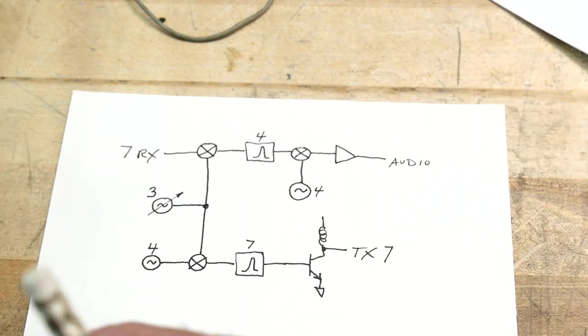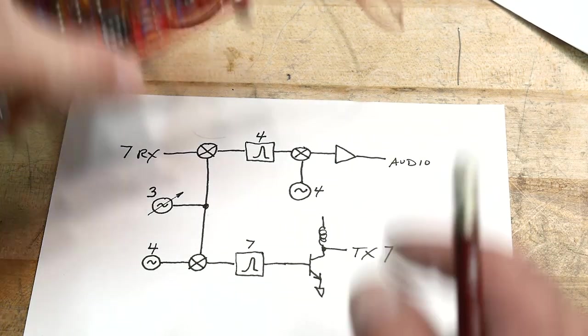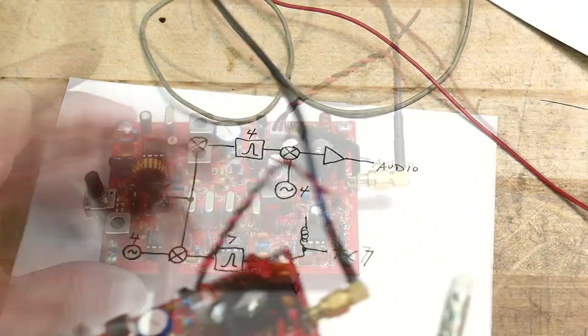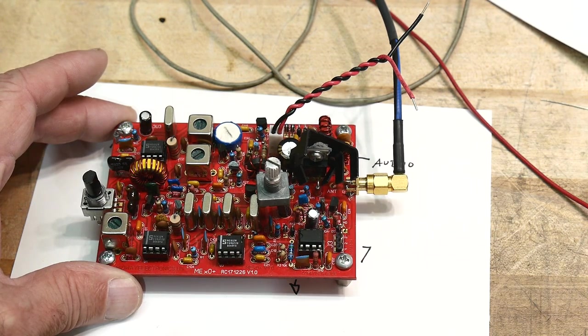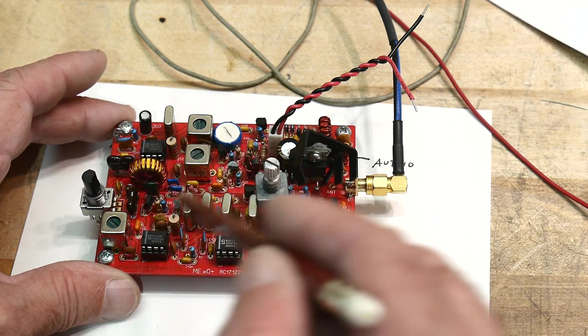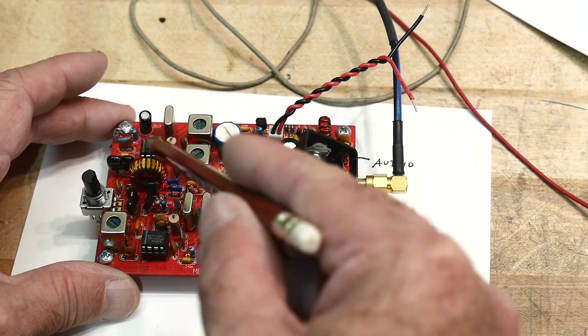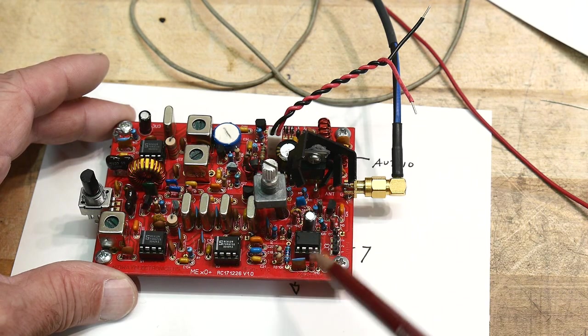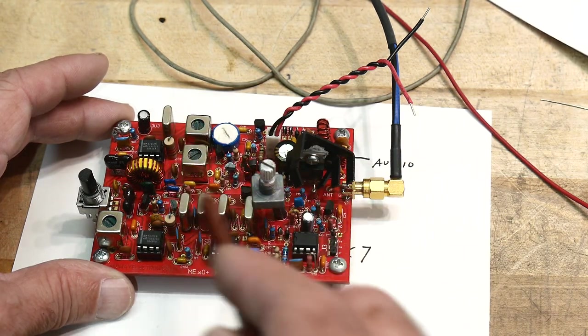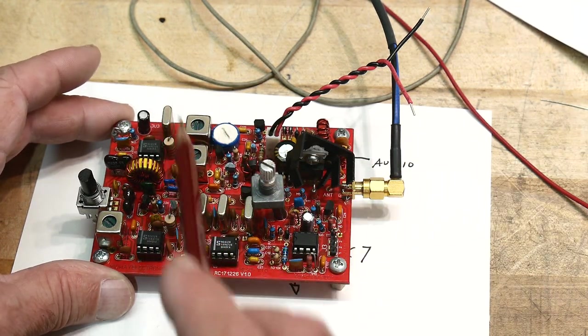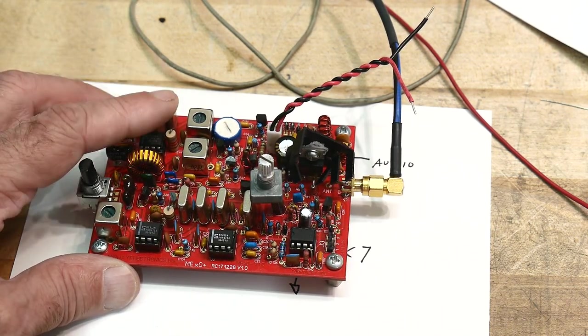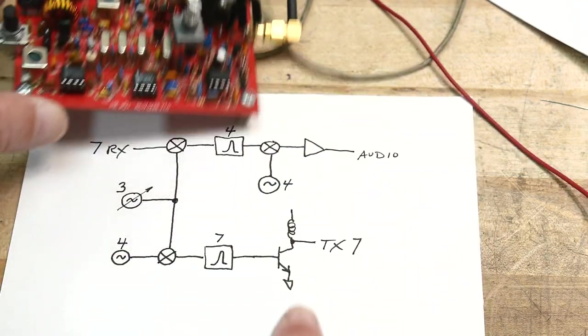Now what makes this quite clever is if you take a look at the PC board, there's 1, 2, 3, 4, 5 crystals, but they're all 4 MHz. And there's 1, 2, 3, 4 ICs, but only 3 of them are exactly the same NE612s, and then a generic op amp. The really cool thing is that it's all based on 4 MHz.